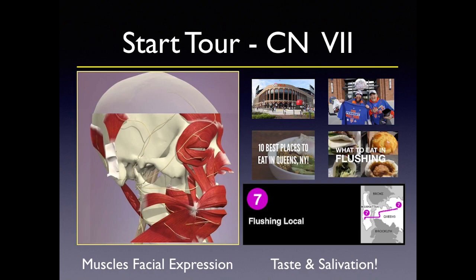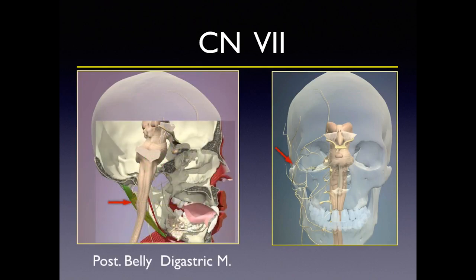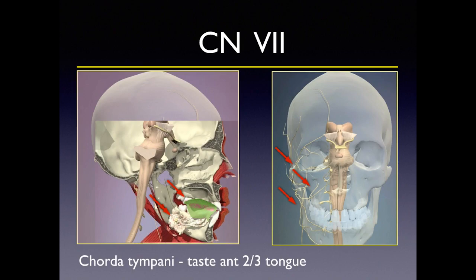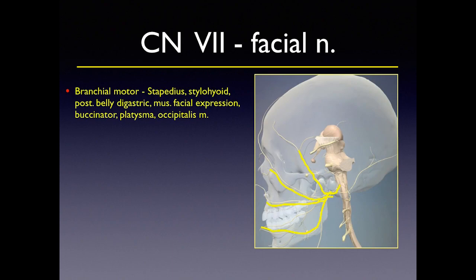Cranial nerve 7 does a lot of different functions. It's responsible for the muscles of facial expression, and importantly for taste and salivation. As it exits the brainstem, it's protected by the mastoid tip. It innervates the posterior belly of the digastric — an easy way to remember this is Heinz 57 on your steak sauce: 5 is for the anterior belly, 7 for the posterior belly. It innervates the submandibular and sublingual glands, and the chorda tympani innervates the anterior two-thirds of the tongue. The facial nerve has four key functions: branchial motor innervating the stapedius, stylohyoid, posterior belly of the digastric, the muscles of facial expression, buccinator, platysma, and occipitalis muscle.